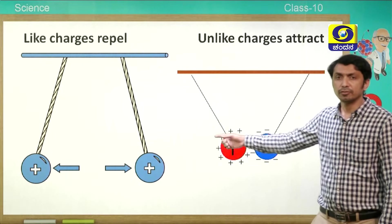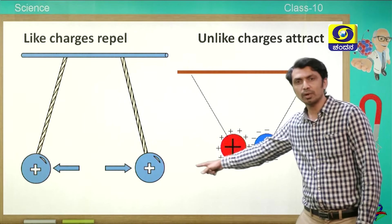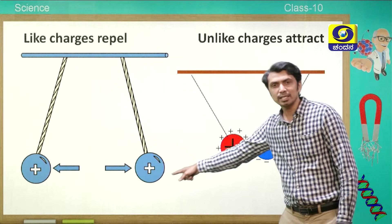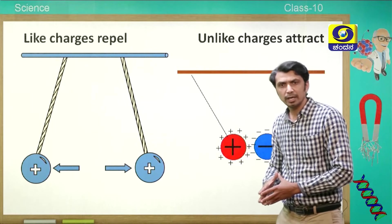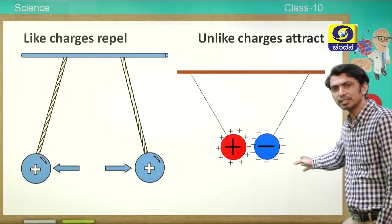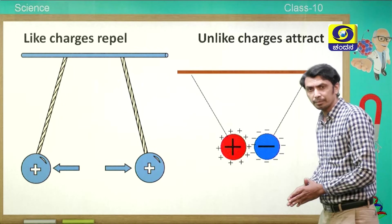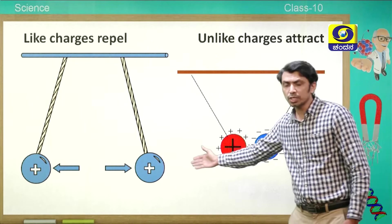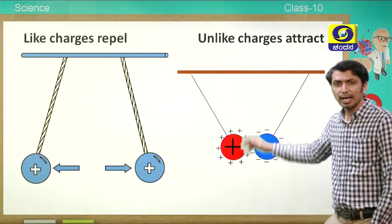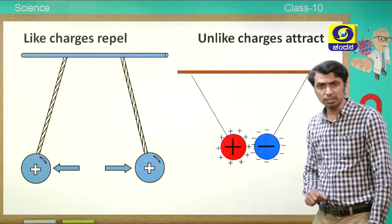If you can see, there are two positive charges present here, and they are moving away from each other. When one charge is positive and the other is negative, they get attracted to each other. We call two charges of the same type 'like charges,' and if one is positive and the other is negative, they are called 'unlike charges.'